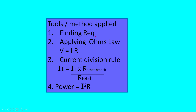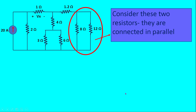The tools and methods we will apply are: first, finding R equivalent for parallel or series combinations of resistances. Then we apply Ohm's law, V = IR. We also apply the current division rule — the current through a particular branch equals the total current multiplied by the other branch's resistance divided by the total resistance. Finally, we use the power formula P = I²R, measured in watts.